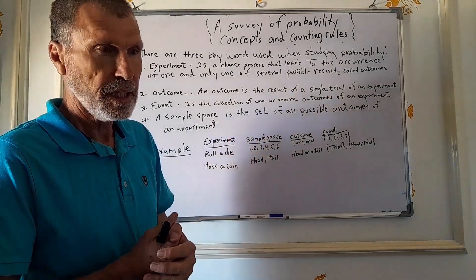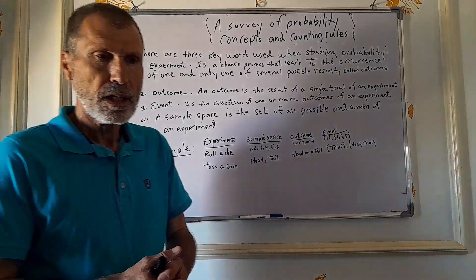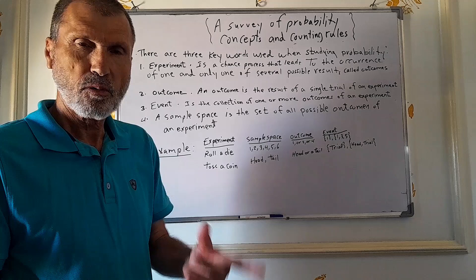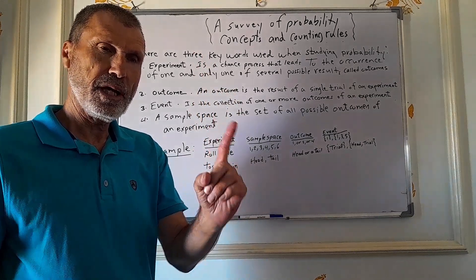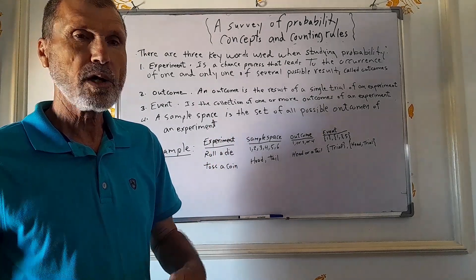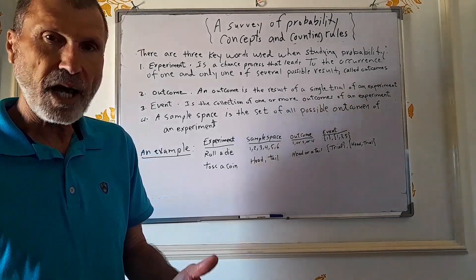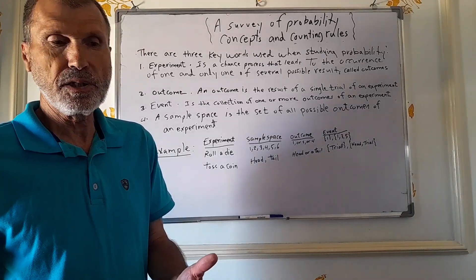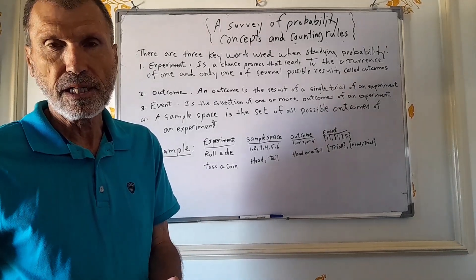An experiment is a chance process that leads to the occurrence of one and only one of several possible results called outcomes. For instance, when you toss a coin, you come up with either a tail or head — one possible outcome. When you roll a die, the die consists of six faces, so you come up with one, two, three, four, five, or six.